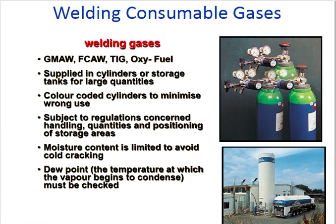Welding consumable gases — which gases are consumable? GMAW, FCAW, TIG, and oxy-fuel. Gases are supplied in cylinders or storage tanks. Color codes on cylinders are used to minimize wrong use; for example, acetylene for oxy-fuel is different from others. Storage areas are subject to regulation concerning handling quantities and positioning. Moisture content is limited to avoid cold cracking. Dew point — the temperature at which vapor begins to condense — must be checked.